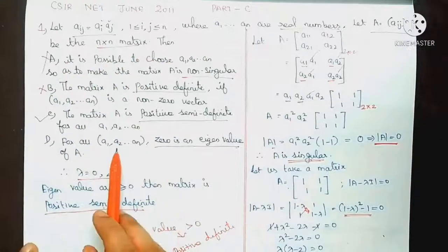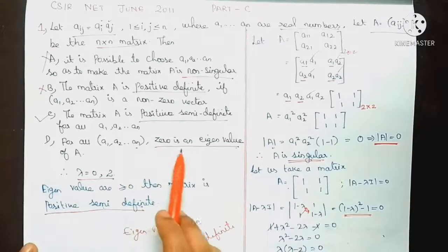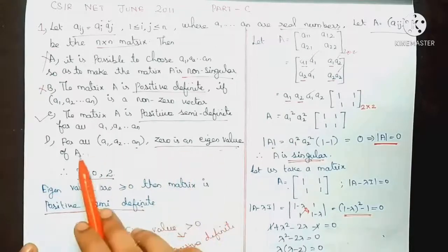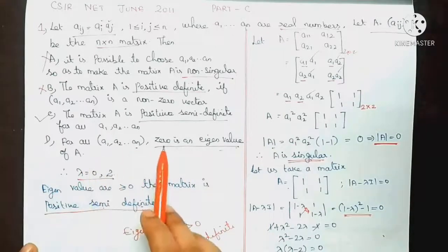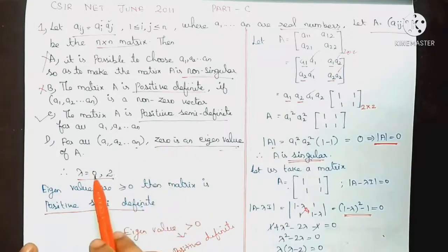Next, A1, A2, also A1N. Since 0 is an eigenvalue of the matrix, 0 is an eigenvalue of E.